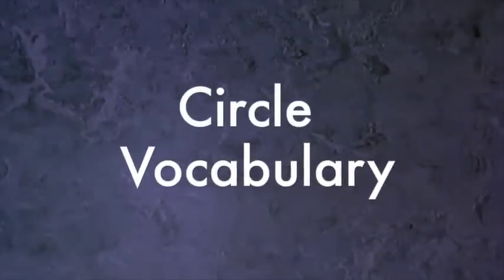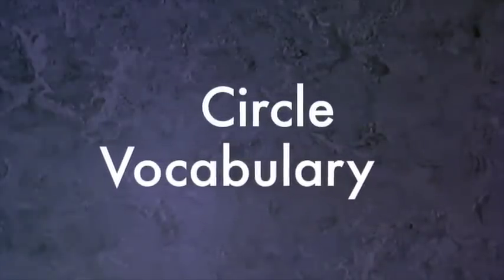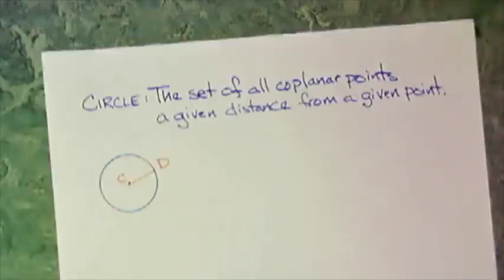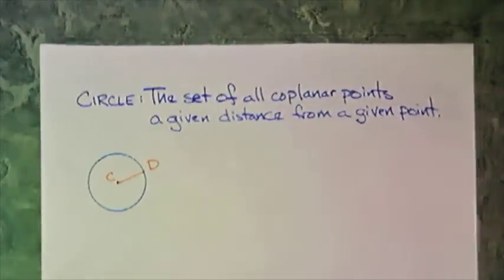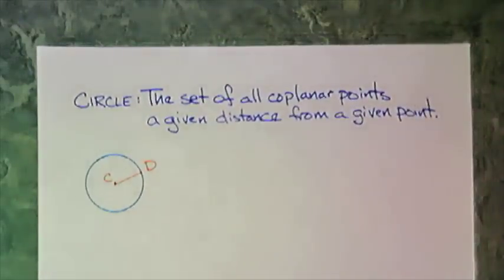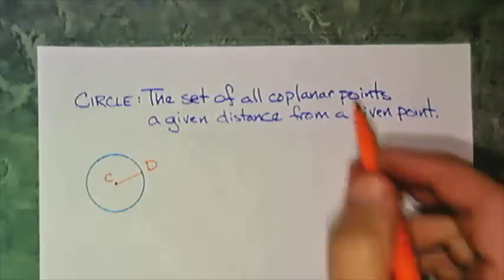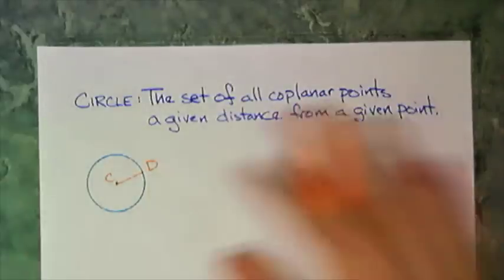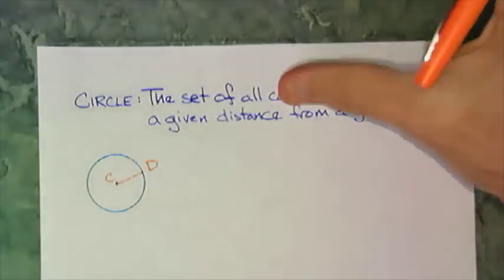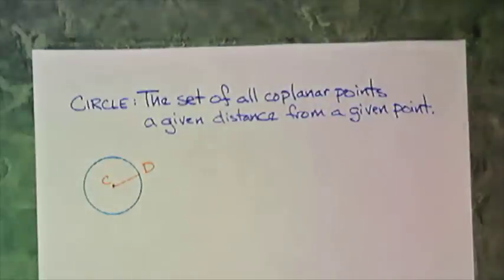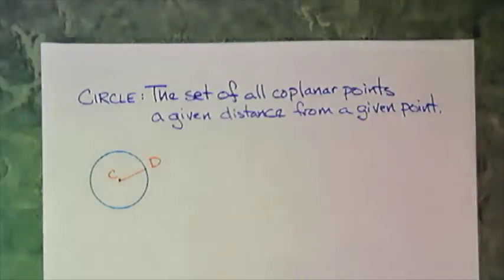Now for the circle vocabulary. First off, let's define what a circle is. A circle is the set of all coplanar points a given distance from a given point. Notice that we use that word coplanar. We keep it in a plane. If we take out that word, we would make a sphere. So that would be the same definition, but makes for a sphere.